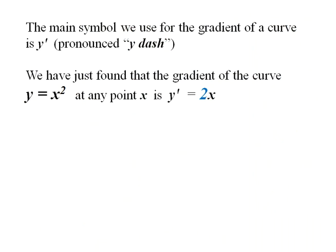Now, the main symbol we use for the gradient of a curve is Y dash. We've just found that the gradient of the curve Y equals X squared at any point X is Y dash equals 2X. Now, this doesn't mean very much to most students until you point it out clearly like this.